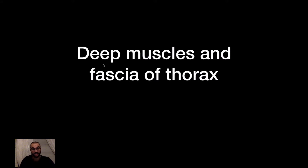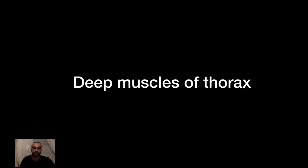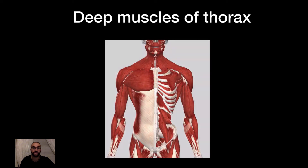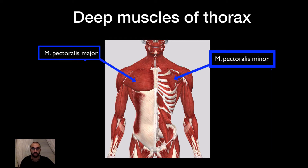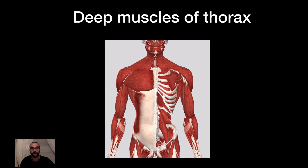Hello and welcome to another video. In this video I'm going to talk about the deep muscles and the fascia of the thorax. The deep muscles of the thorax are found right underneath the superficial muscles of the thorax — the Musculus Pectoralis Major and Musculus Pectoralis Minor and some abdominal muscles. When you remove them you will find muscles in between each rib and also on the posterior side next to the vertebrae.